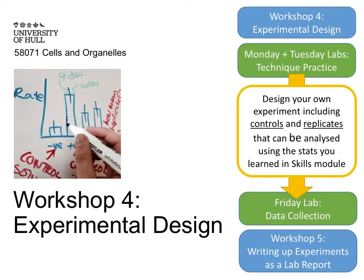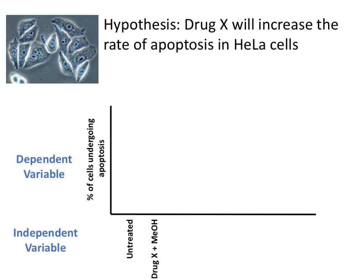In order to do this, we're going to have to think a little bit about how we design really robust experiments so that we can genuinely test a hypothesis. Here's a hypothesis that we could design an experiment to test: drug X, a new drug, will increase the rate of apoptosis in HeLa cells — those are the human cancer cells that we discussed in the lectures. So we'd set up an experiment to do this.